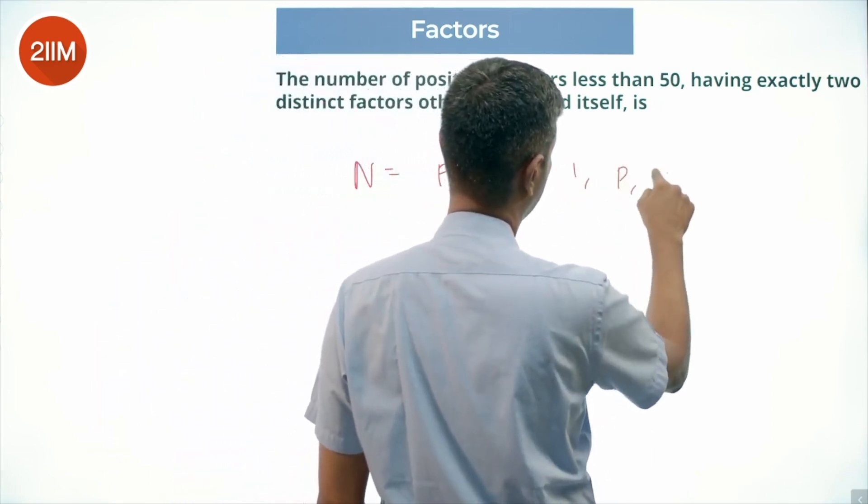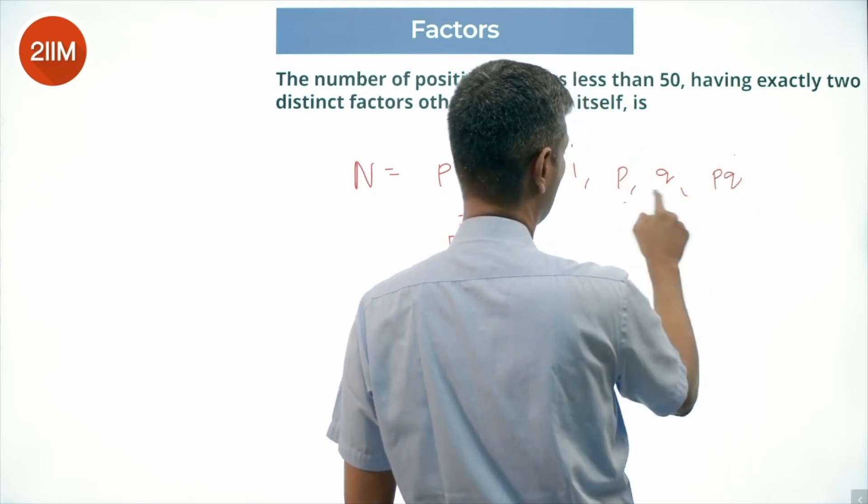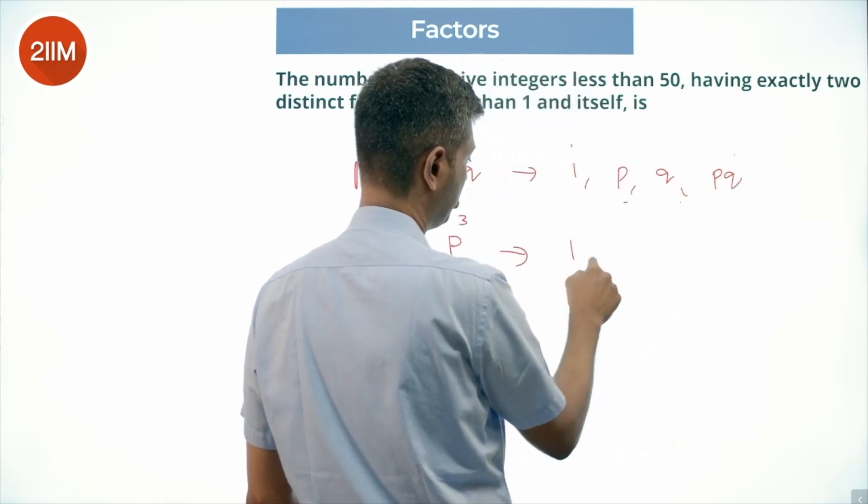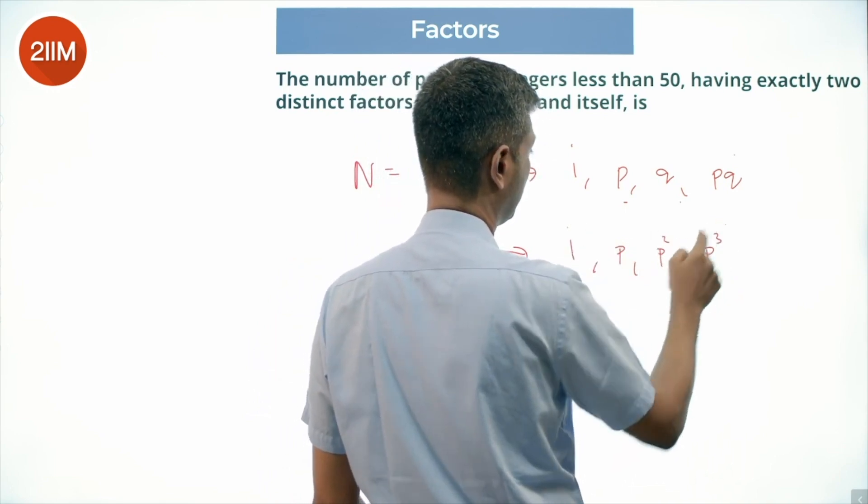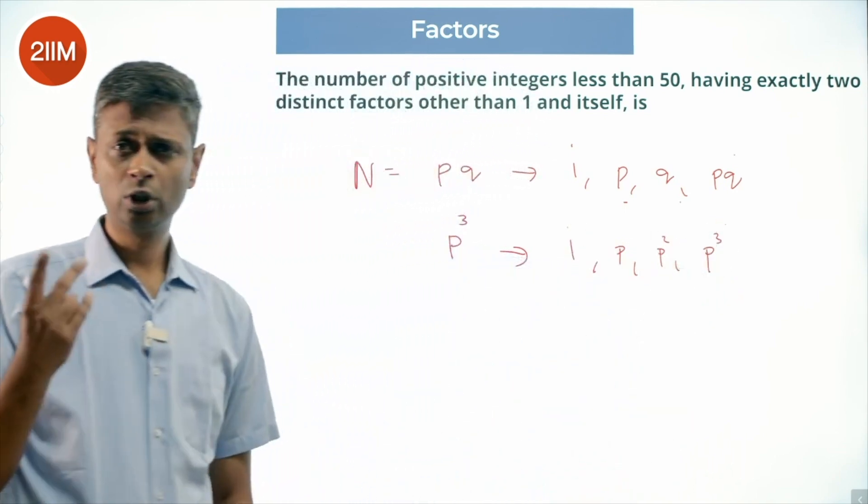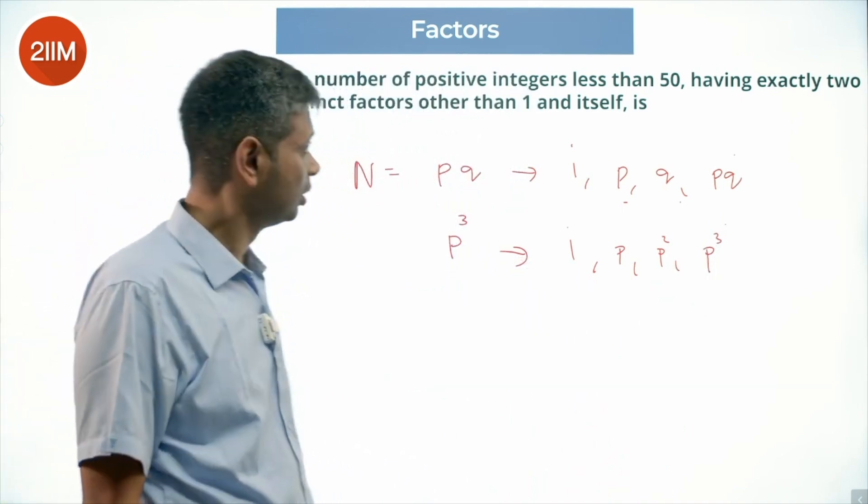The factors are 1, p, q, pq. This is 1, this is n—two other factors. Numbers of the form p³ have factors 1, p, p², p³. Other than one and itself, two other factors, four factors totally. So what are the numbers we're looking for? p and q should be distinct.